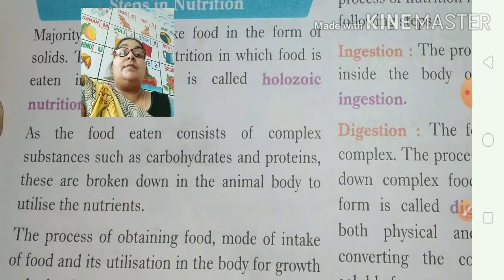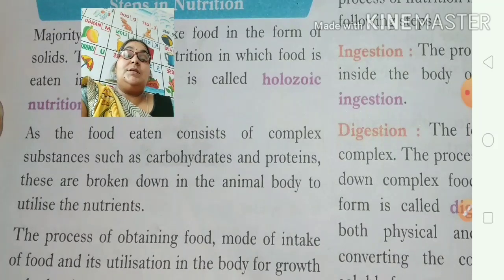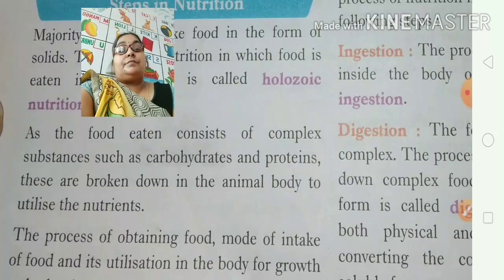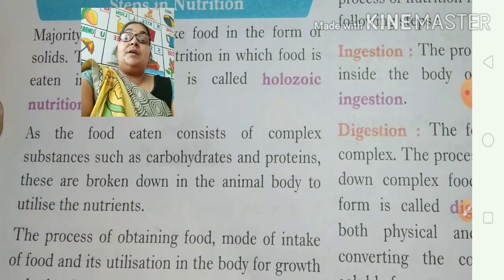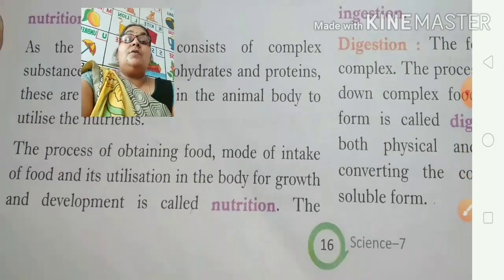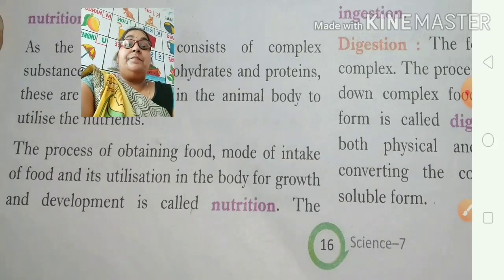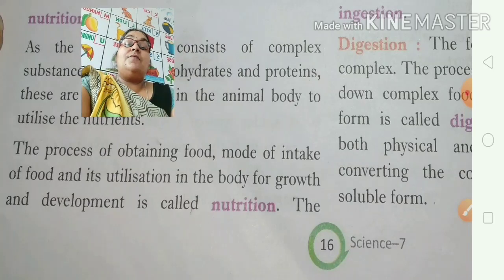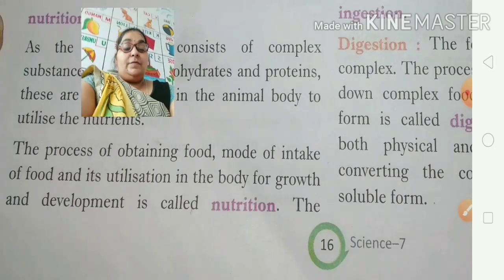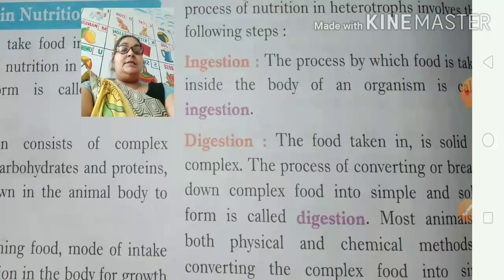These are broken down in the animal body to utilize the nutrients. As we take any food to eat, the food provides us energy to do the work. The proteins or carbohydrates which are taken in are broken down in the animal's body and they utilize those nutrients. The process of obtaining food, mode of intake of food and its utilization in the body for growth and development is called nutrition.